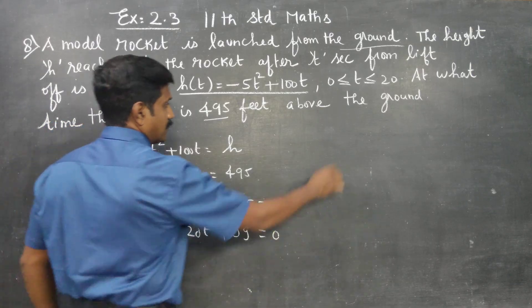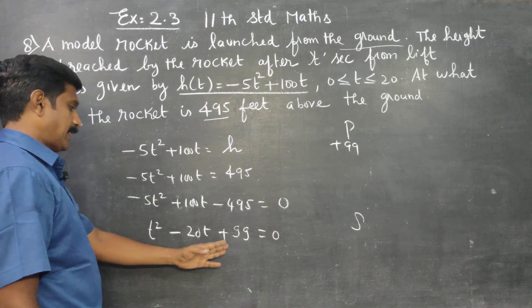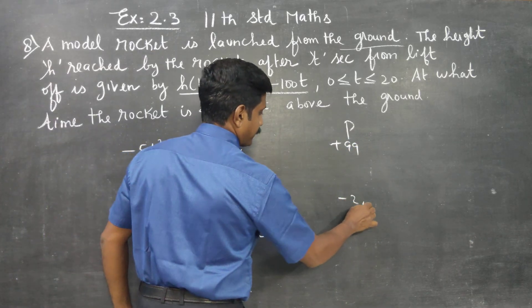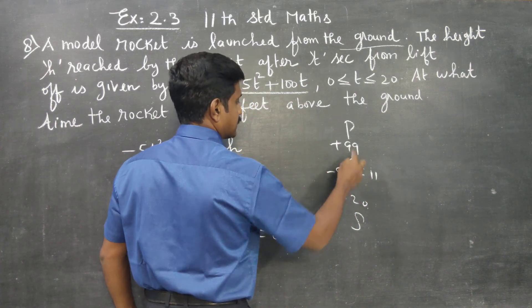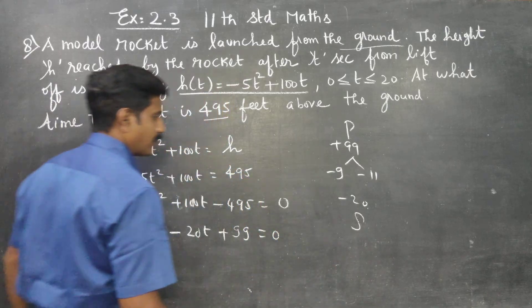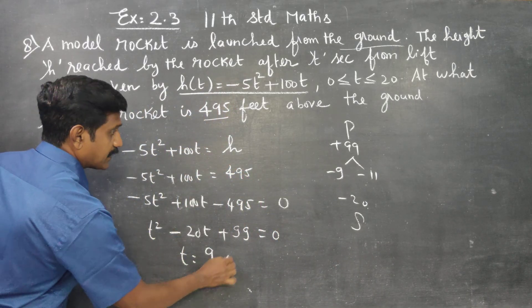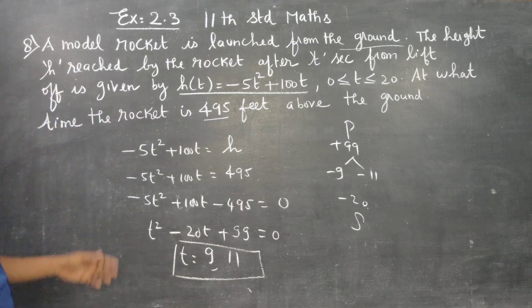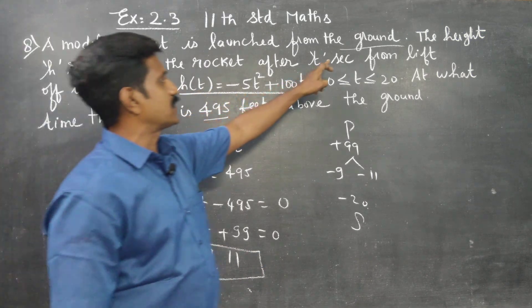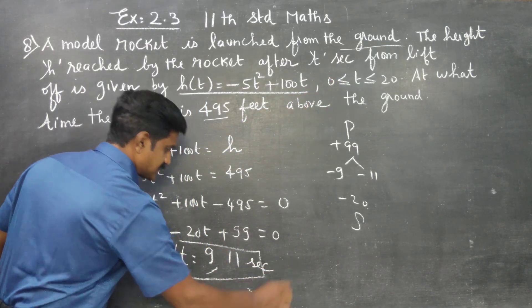You have to factor. Your product is plus 99, your sum is minus 20. 9 and 11: minus 9 times minus 11 equals plus 99, and they add to minus 20. Therefore (t-9)(t-11) = 0. There are two answers for this. Your answer will be 9 seconds comma 11 seconds.